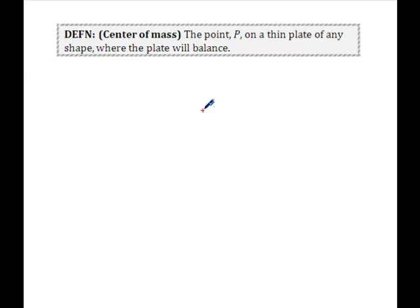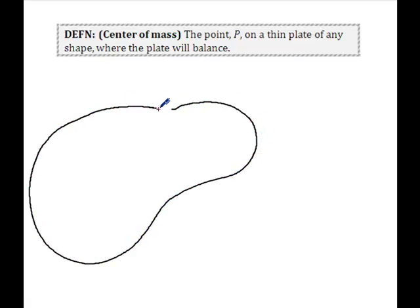The first thing we need to define is the center of mass. This is the natural concept: if I have a region like this, the center of mass is some point P such that if I were to pick up this plate — this peanut-shaped plate — that plate will balance if I place my finger right there. It is the center of the mass of the object. And of course you could do this for any number of objects. The question is, how do we find that center of mass?